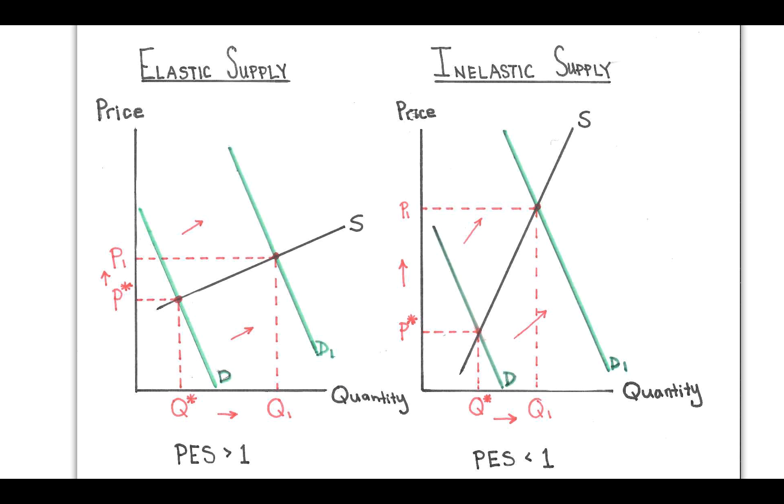I want to draw your attention to elastic supply on the left and we're going to take a look at this first. I've set up price and quantity on the x and y axis and I've put the value of PES as greater than 1 because when that's the case it is elastic and as you can see my supply curve is elastic.